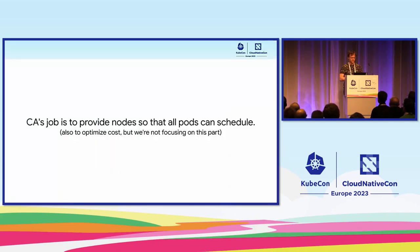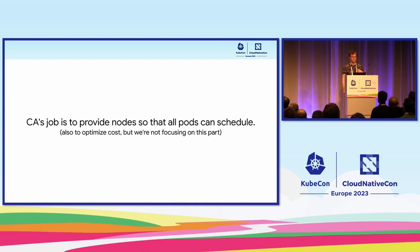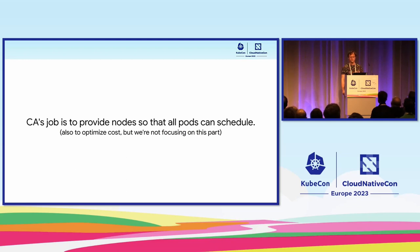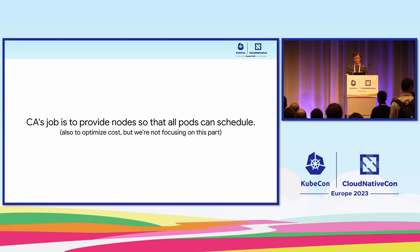I want to start with a quick mission statement. The problem I'm going to focus on is making sure that all pods can schedule. This is really the primary job of Cluster Autoscaler. If you don't have enough nodes in your cluster and your pods cannot schedule when you want to run a batch job or a traffic spike hits, then Cluster Autoscaler just isn't doing its job and there is a problem that needs to be fixed.